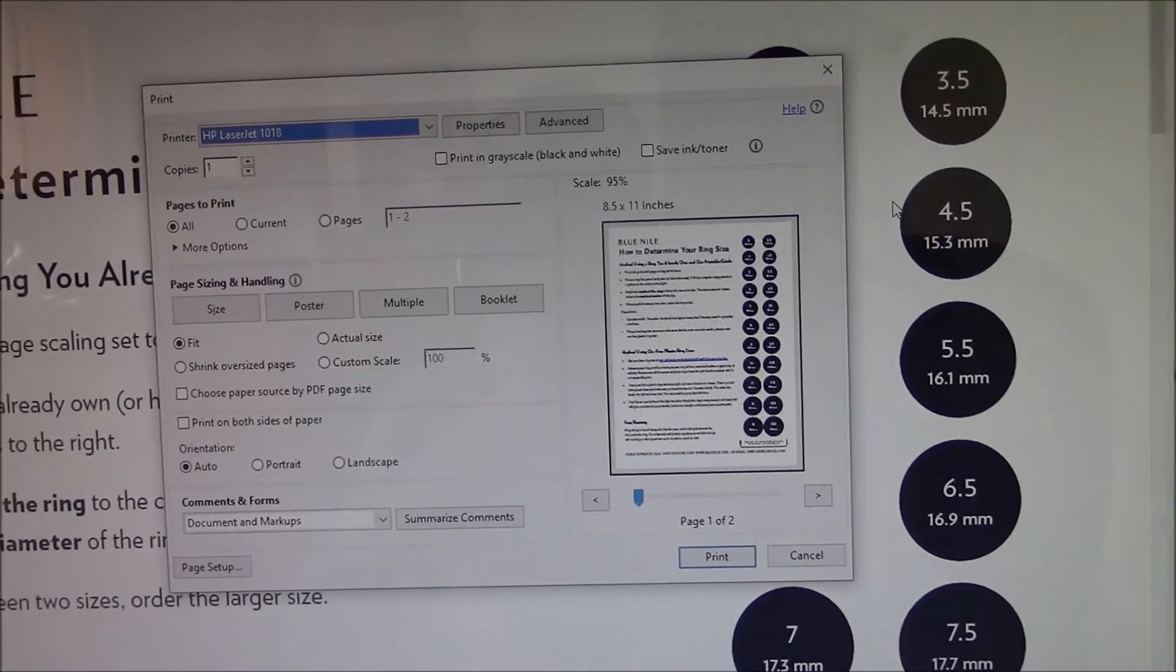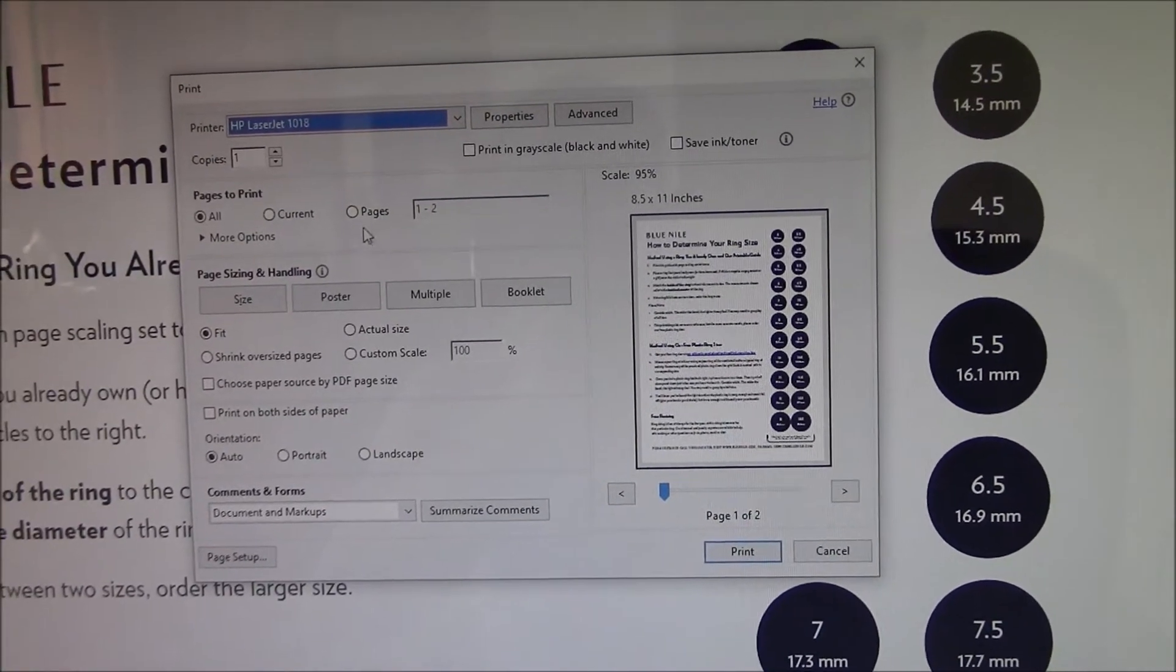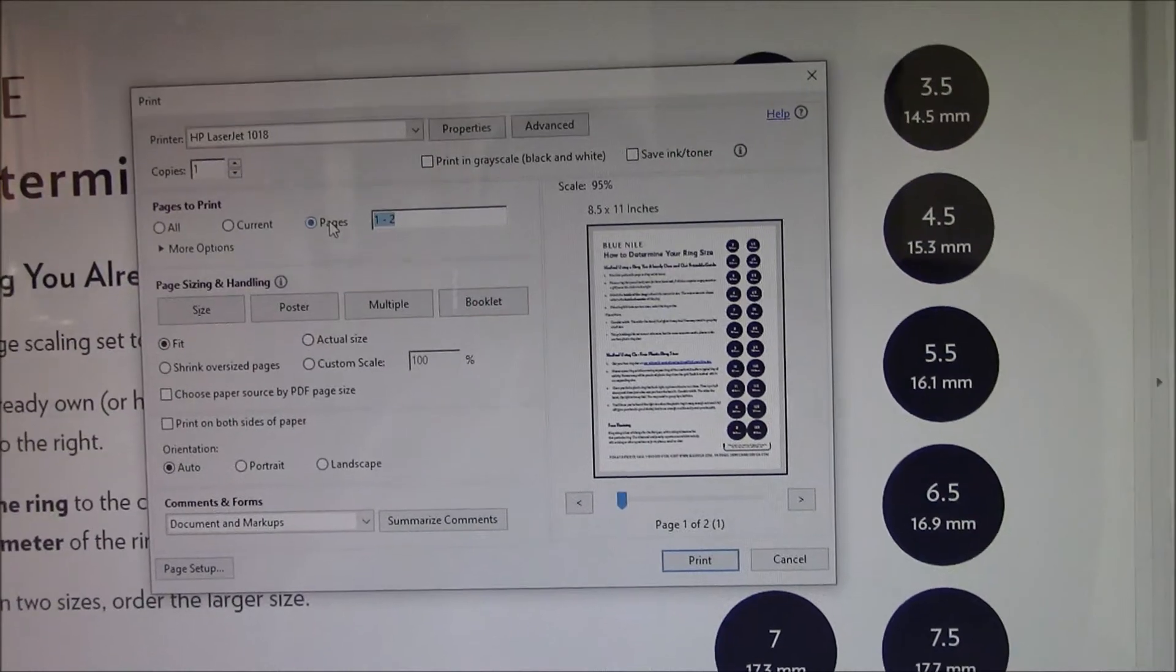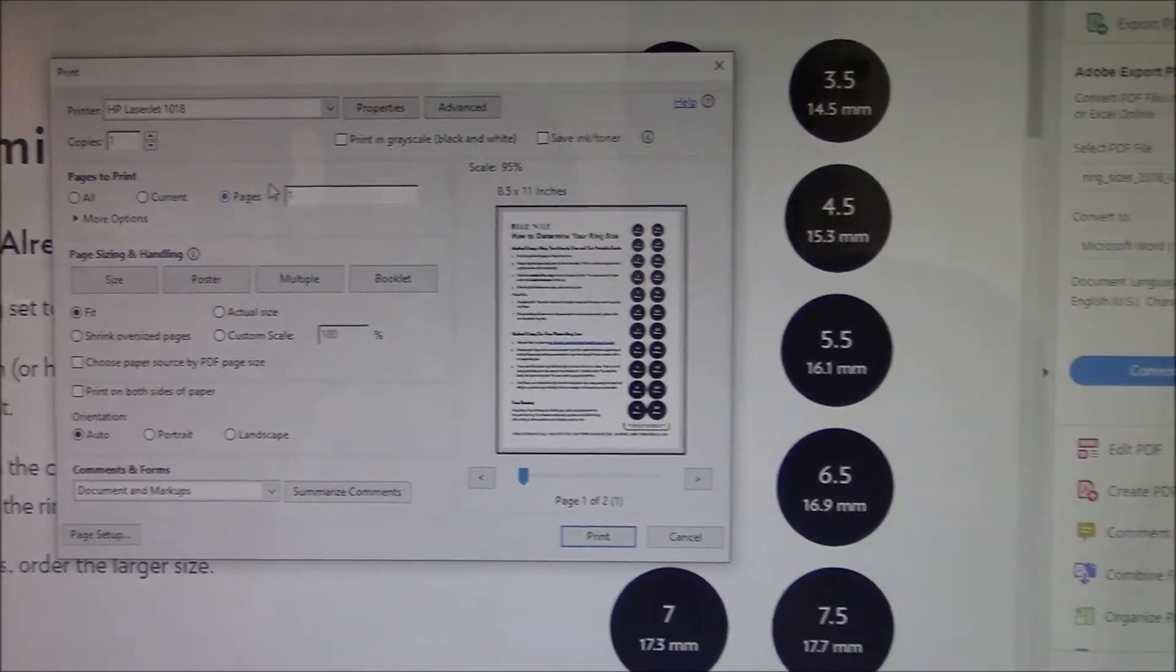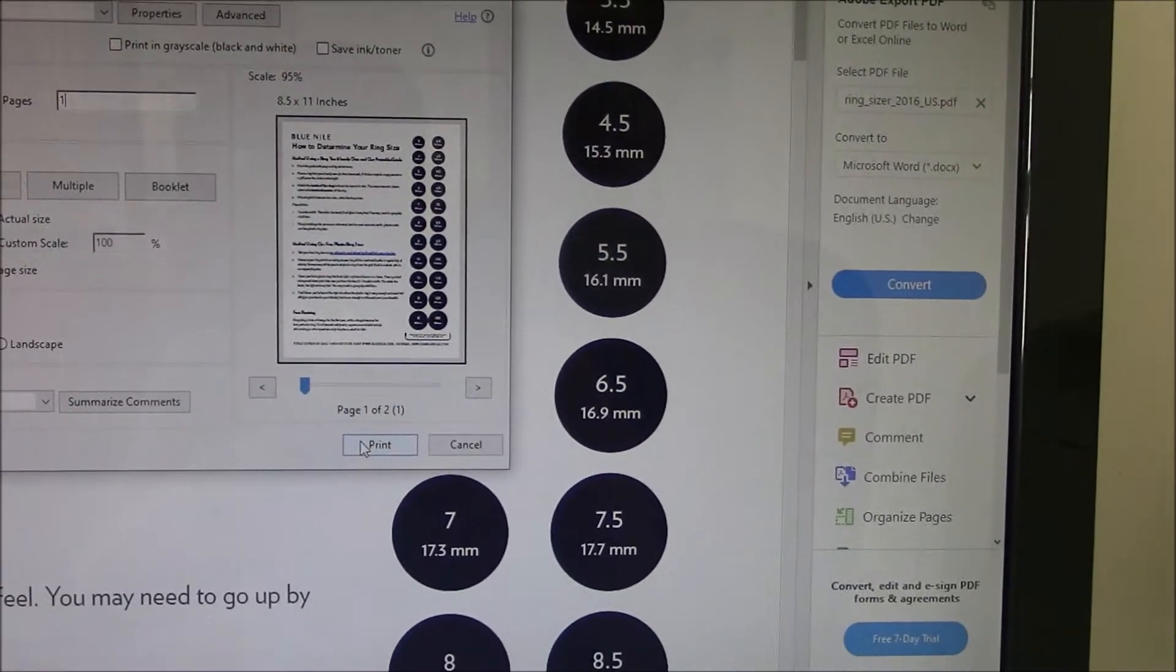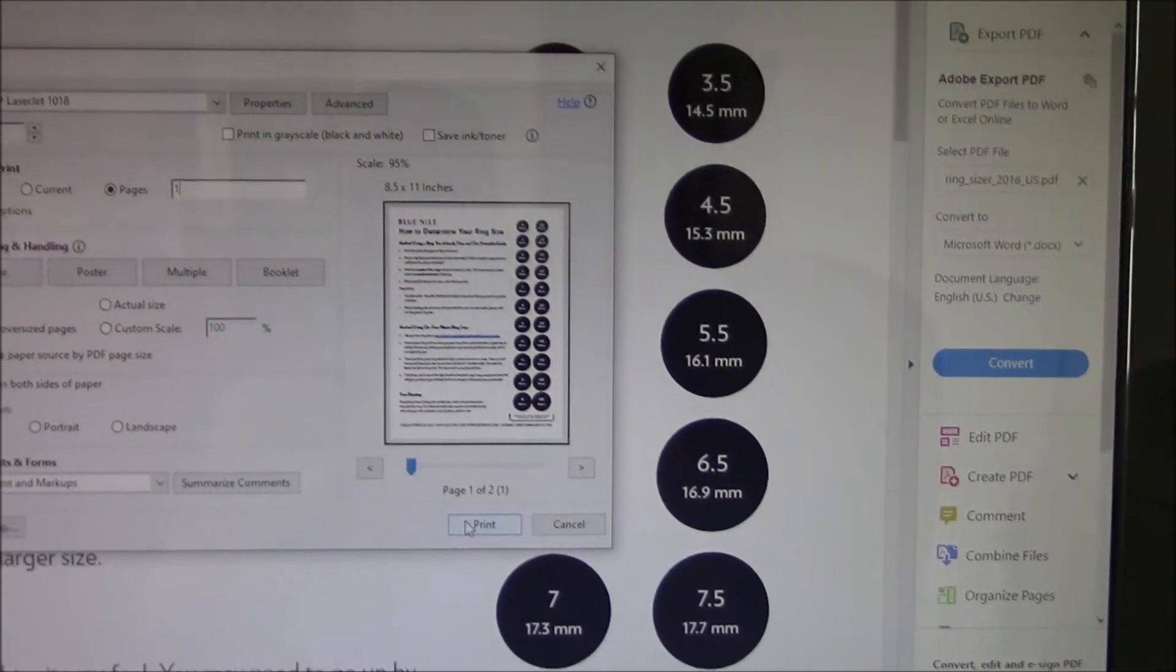You need the first page for the ring size, so you could change this to 1. And then you can just go to Print, and you can print out the ring size page.